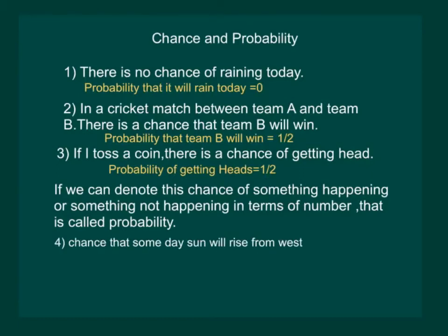Consider another example. If we say that the chance that someday the sun will rise from the west has to be represented in terms of numbers, then we will say that the probability of the sun rising from the west is equal to 0, as we know that the sun rises from the east.